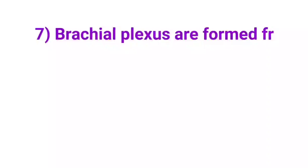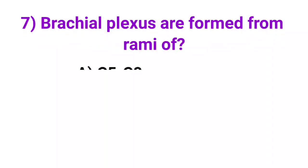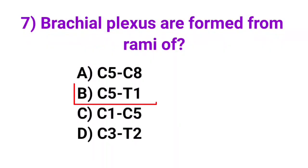Question number 7: Brachial plexus are formed from rami of? Correct answer is option B, C5 to T1.